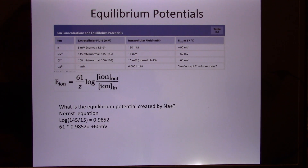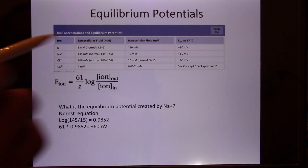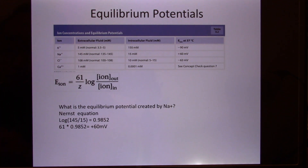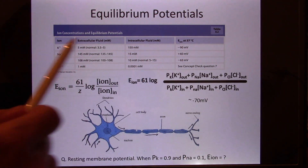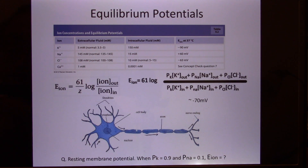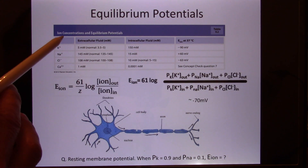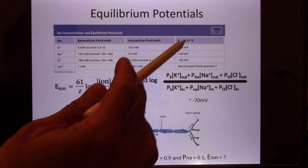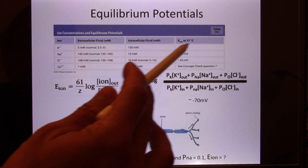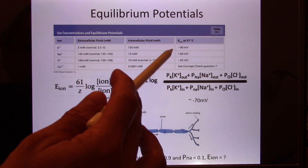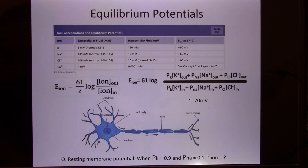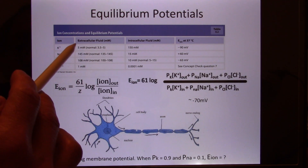Before the break we talked about the resting membrane potential and equilibrium potential. We found it's mainly contributed by potassium because we measure about minus 17 millivolts. Using the model, the resting membrane potential contributed by potassium is about minus 19 millivolts, contributed by sodium is plus 16 millivolts. The measured value is minus 17, so it's mainly contributed by potassium.